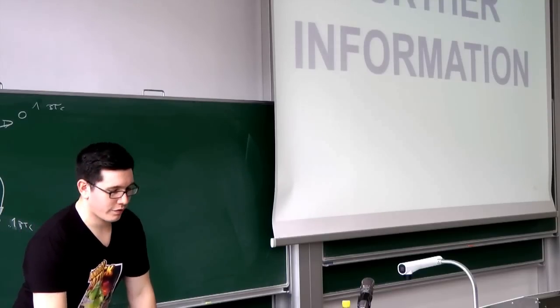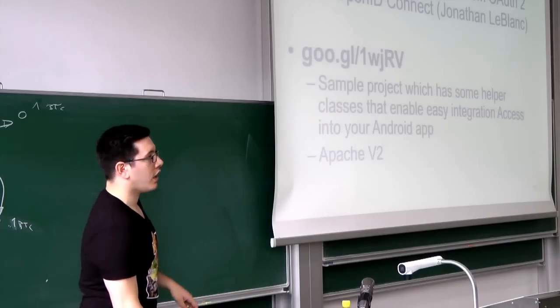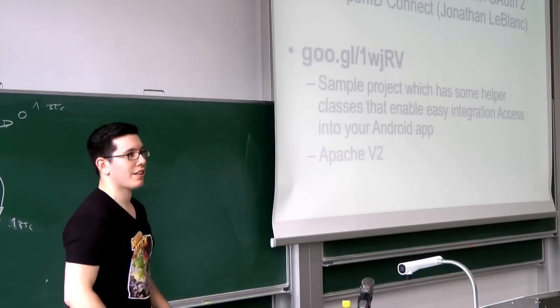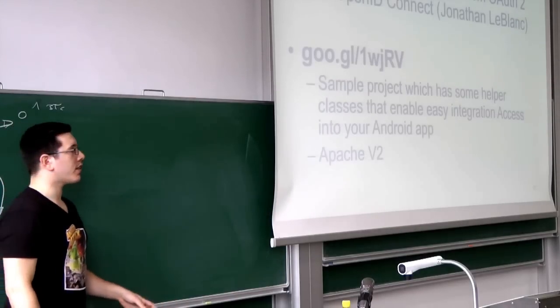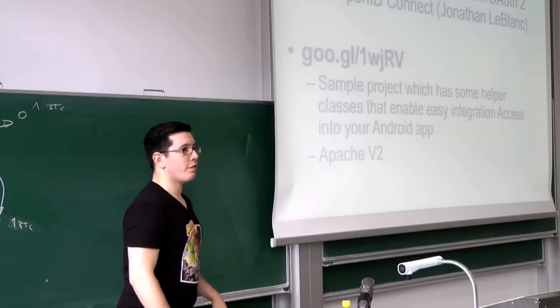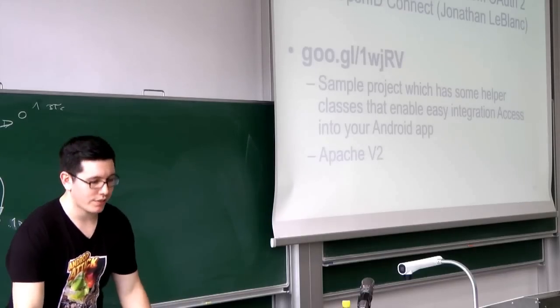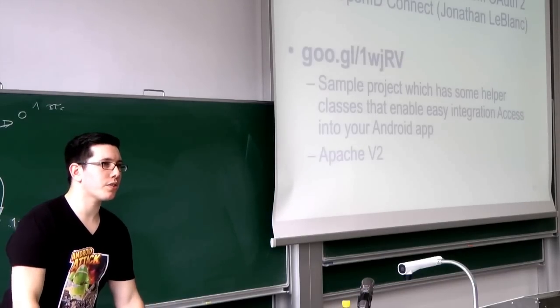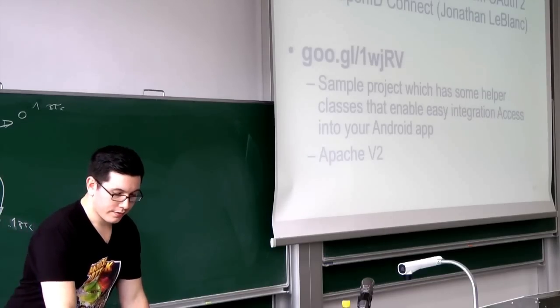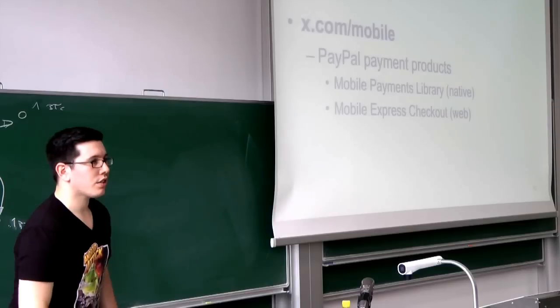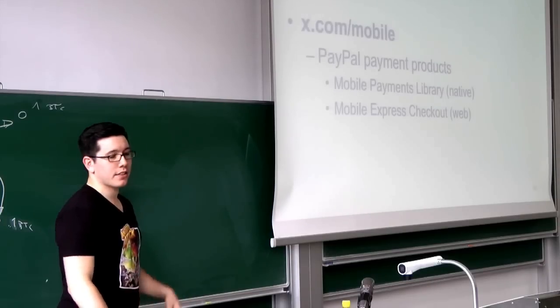So, if you want to have further information about all those things, there are two useful links I can provide. One is migrating access to OpenID Connect because I think it's much nicer than OAuth. And, there is a sample project for Android. It's hosted on Github. It uses the Apache v2 license, so you can just use it, modify it, but you have to mention that you used this thing. And it provides helper classes for using OAuth and OpenID in your application with PayPal Access. There's an official documentation at x.com slash identity, and you can find the payment documentation at x.com slash mobile.